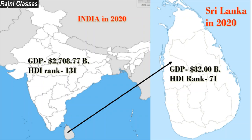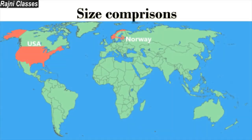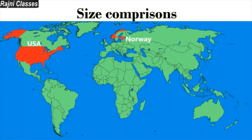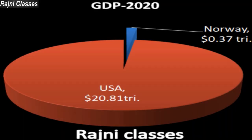For international comparisons, we look at Norway and USA. In size comparison on a world map, we can see that the USA is a big country and Norway is a small country. The GDP comparison for 2020 shows Norway's GDP is 0.37 trillion US dollars, while the USA's GDP is 20.81 trillion dollars.